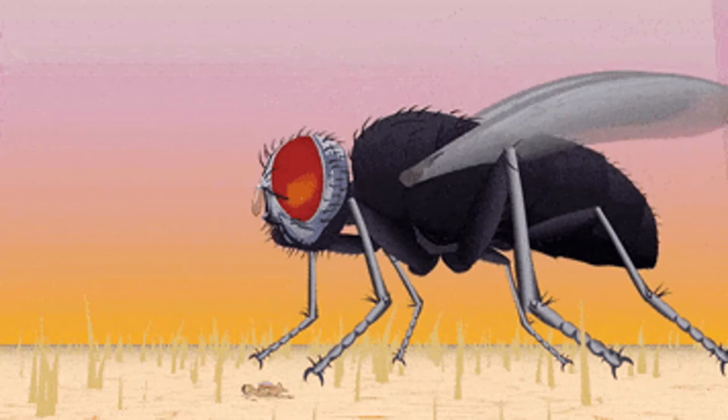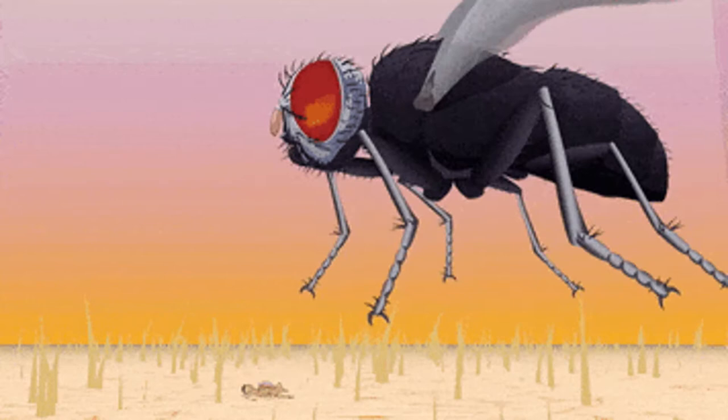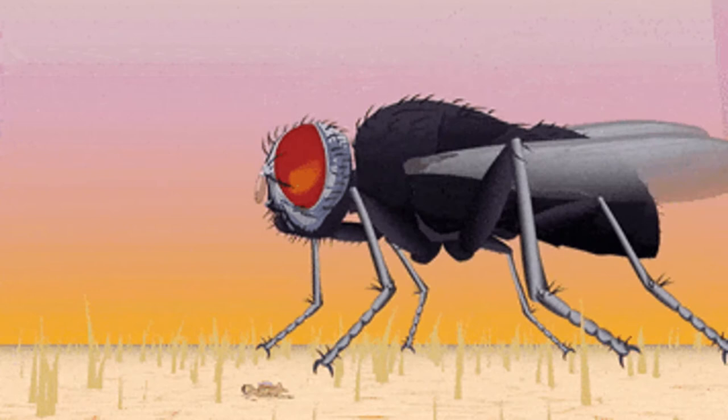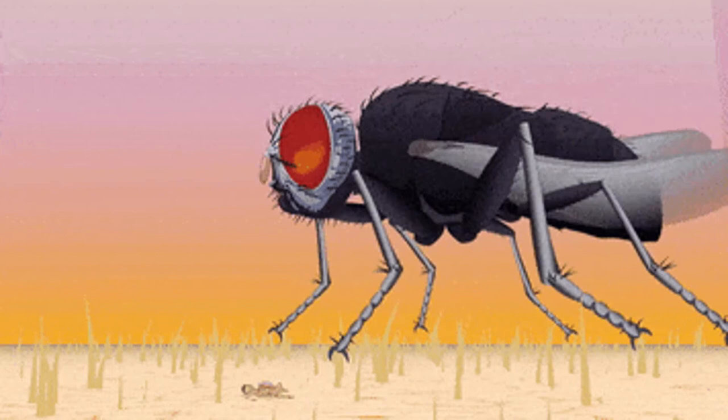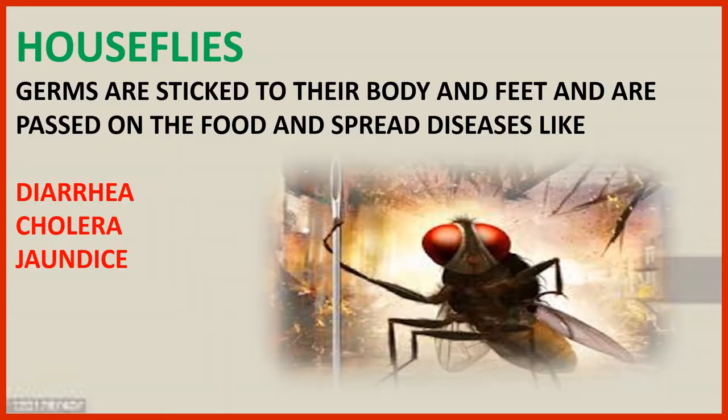When these house flies come into your house and sit on your uncovered food, the germs are left behind on your food, and when you eat it you are infected. So you get diseases like cholera, diarrhea, and jaundice. These are very dangerous diseases spread by house flies.